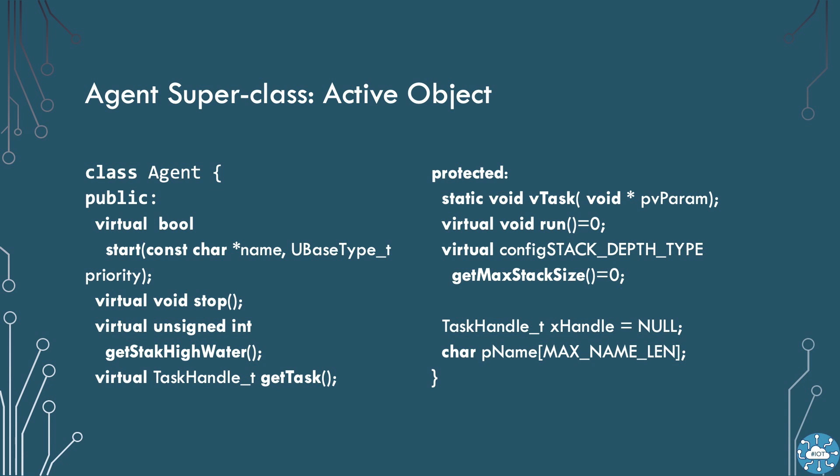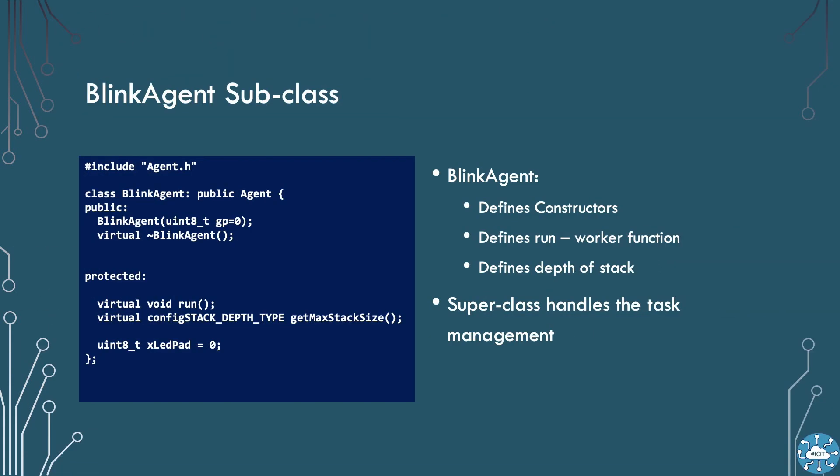To provide an agent subclass I need to provide the run task that will run the main loop of that task. I also need to specify the stack size through defining the get max stack size function. To produce a blink agent — an active agent to blink a single LED — I inherit from agent, take the LED GPIO pad in the constructor and provide the run and stack size methods.